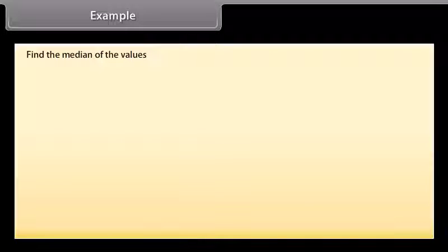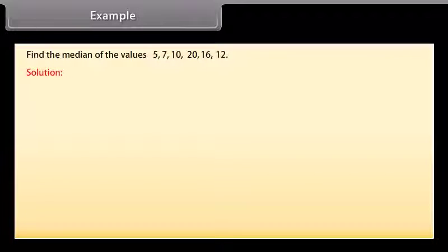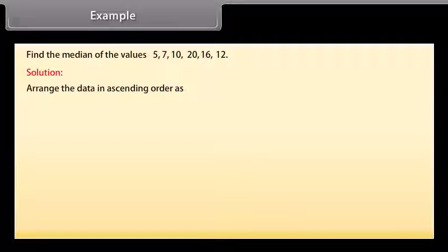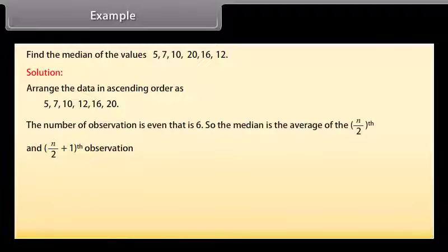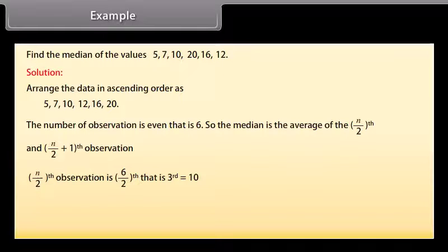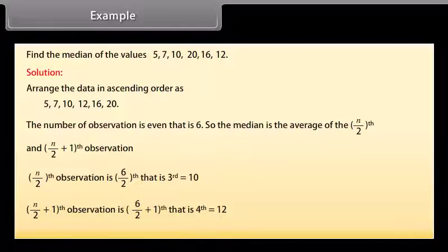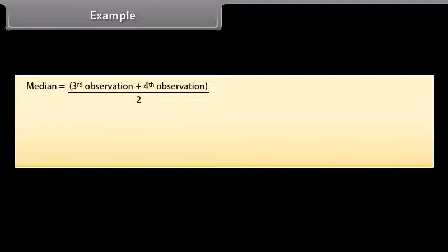Example: Find the median of the values 5, 7, 10, 20, 16, 12. Solution: Arrange data in ascending order: 5, 7, 10, 12, 16, 20. The number of observations n equals 6, which is even. So the median is the average of the (n/2)th and (n/2 plus 1)th observations. The 3rd observation equals 10, and the 4th observation equals 12. Median equals (10 plus 12) divided by 2, equals 11.